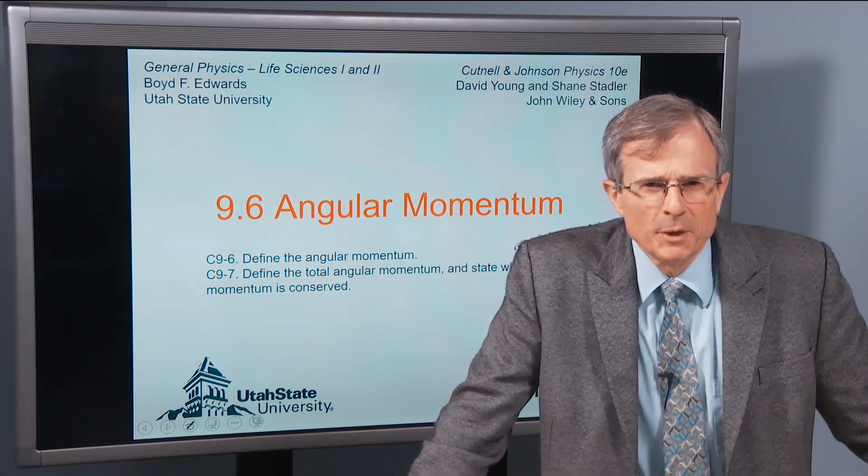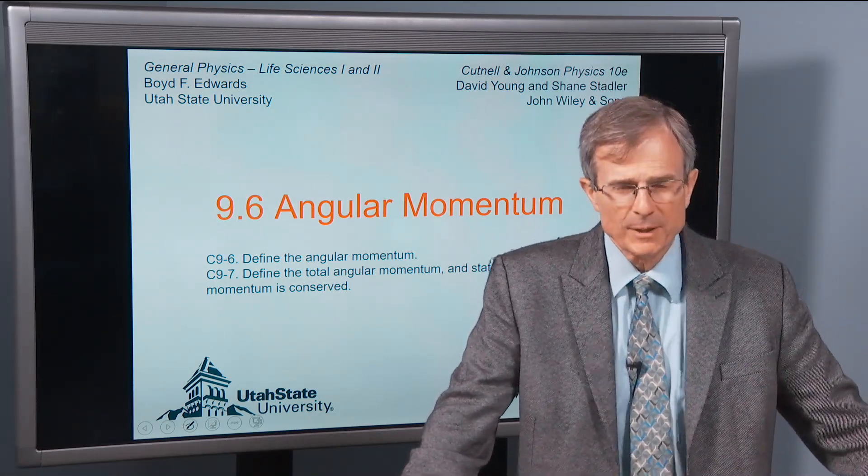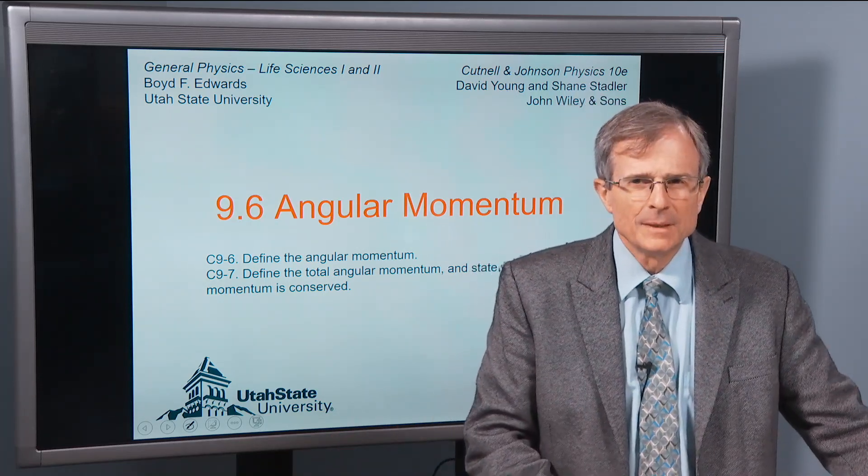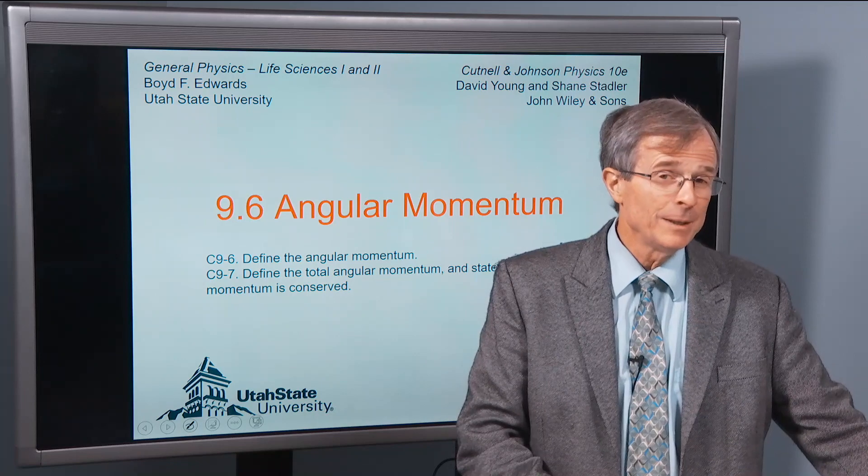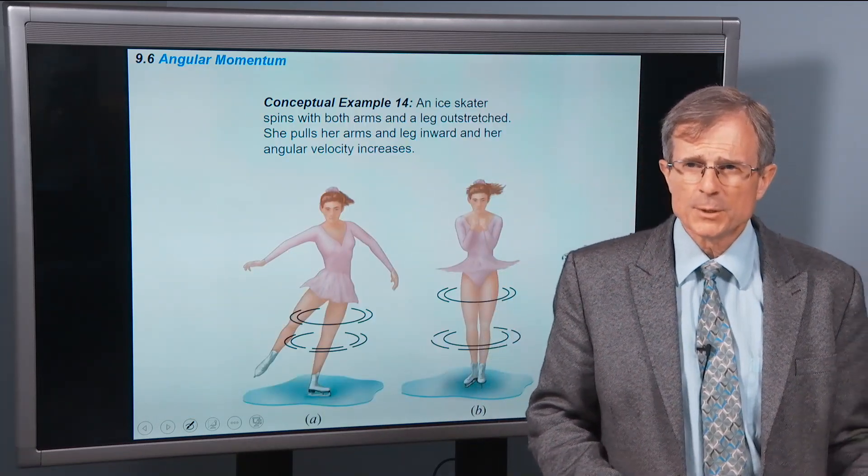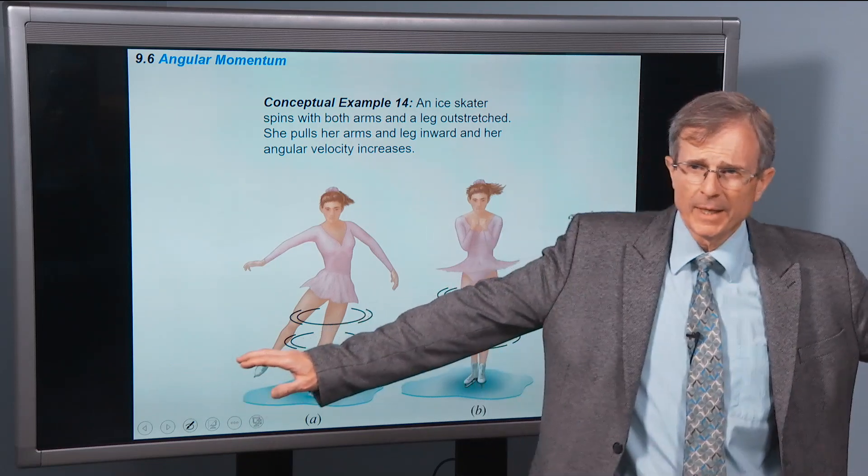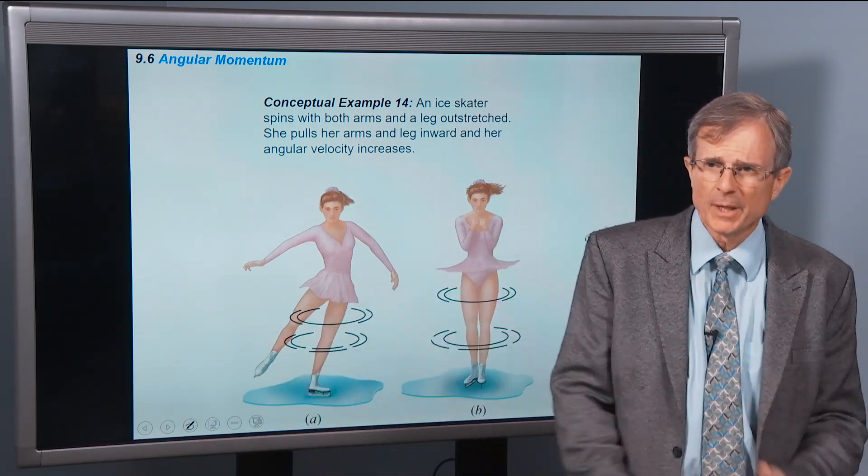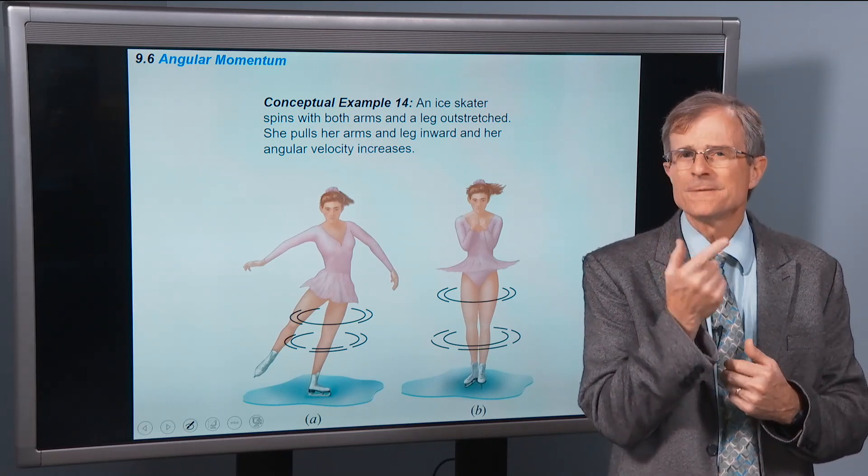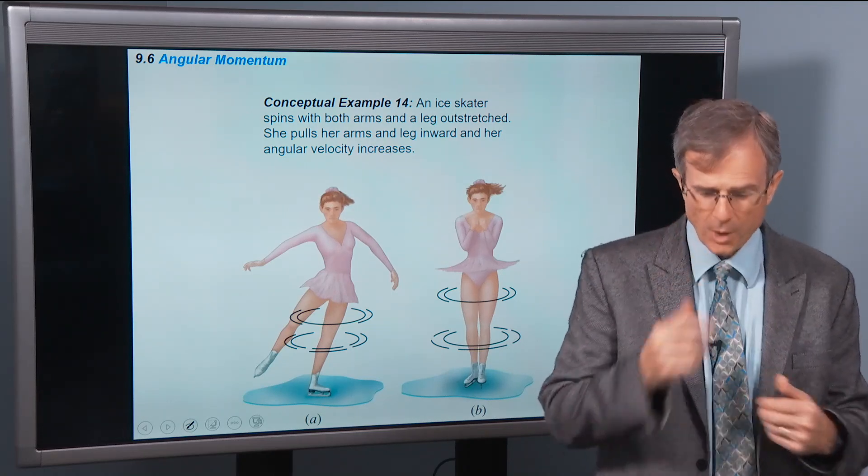OK, we're finally now going to be able to say something about the skater who pulls her arms in and spins faster. It's the topic of angular momentum. So an ice skater spins with both arms and a leg outstretched. She pulls her arms and leg inward, and her angular velocity increases. She spins faster. Why?